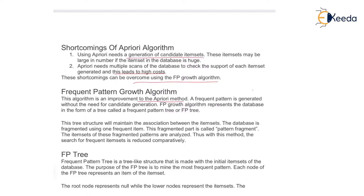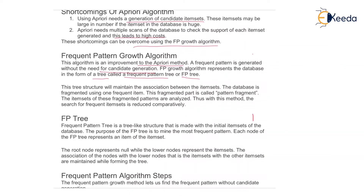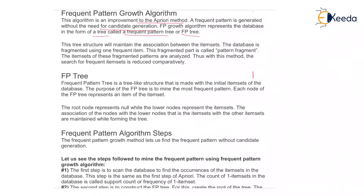This shortcoming can be overcome using the FP Growth algorithm — a Frequent Pattern Growth algorithm. This algorithm is an improvement to the Apriori method. A frequent pattern is generated without the need for candidate generation. The FP Growth algorithm represents the database in the form of a tree called the Frequent Pattern Tree, or FP tree. This tree structure maintains the association between the item sets. The database is fragmented using one frequent item, and this fragmented part is called a pattern fragment. The item sets of this fragmented pattern are analyzed, reducing the search for frequent item sets comparatively.